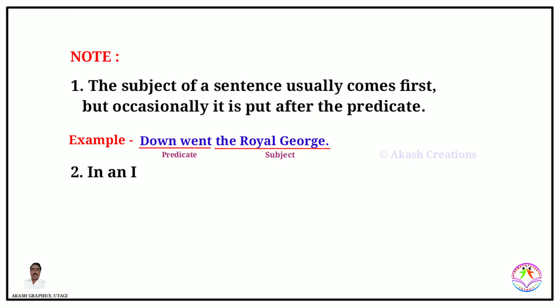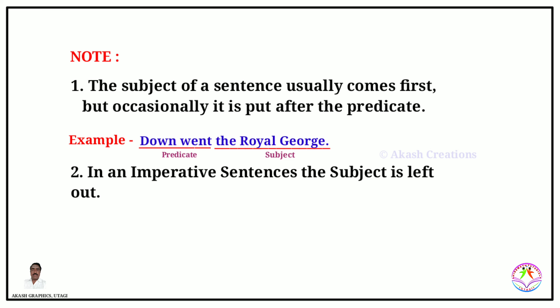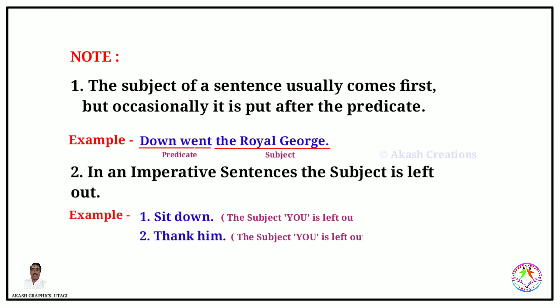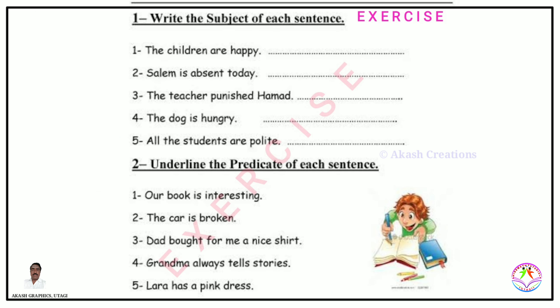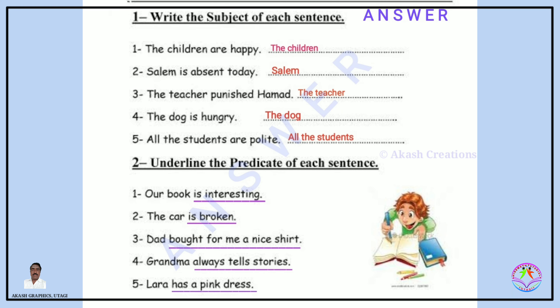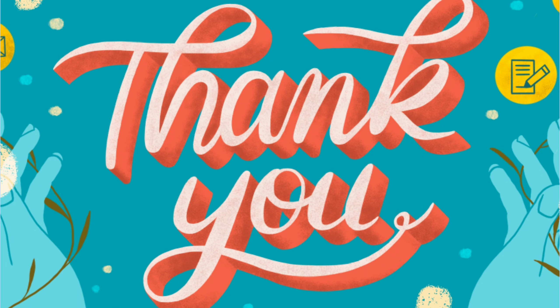In imperative sentences, the subject is left out. For example: number one — 'Sit down.' Number two — 'Thank him.' In these imperative sentences, the subject is understood but left out. Thanks for watching this video.